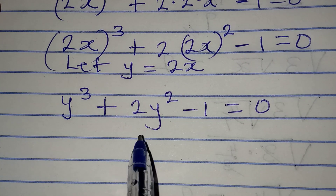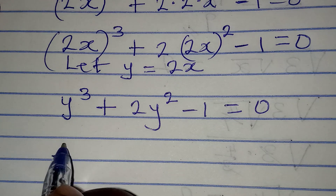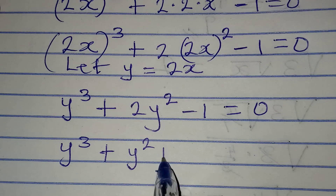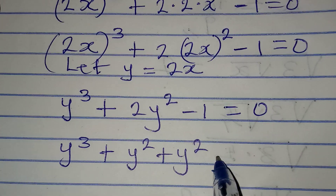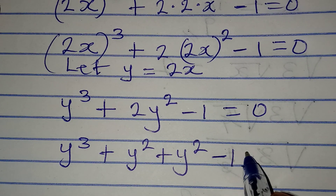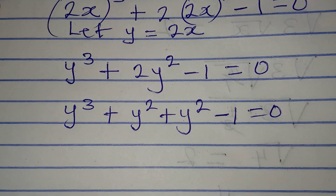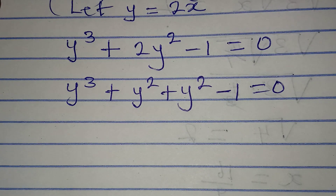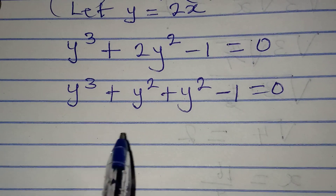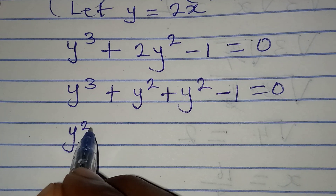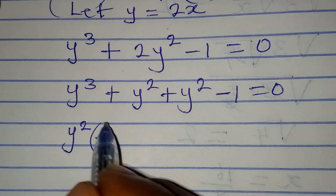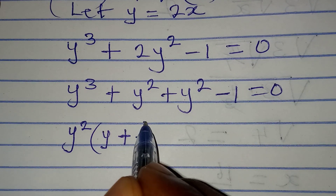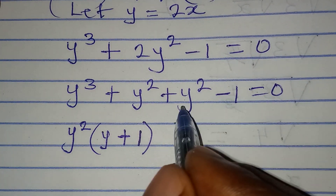But I can split this middle term. So I have y to the power of 3 plus y squared plus y squared minus 1 equals 0. This way I can group it and factorize. If I factorize these two terms, I'm going to have y squared as their common factor, then 1y plus 1.